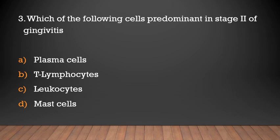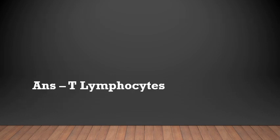Which of the following cells are predominant in Stage 2 of gingivitis? Plasma cells, T-lymphocytes, leukocytes, or others? The answer is T-lymphocytes — T-lymphocytes predominate in Stage 2 of gingivitis.